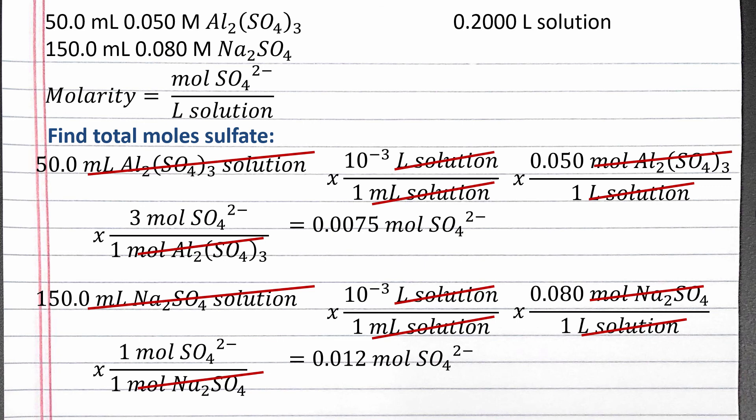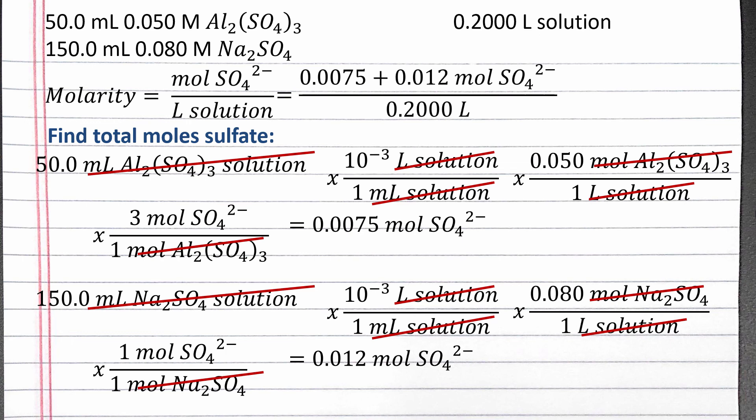We can add these together to find the total moles of sulfate and plug it into our molarity equation. Completing our calculation, our final solution should be 0.098 molar sulfate ions.